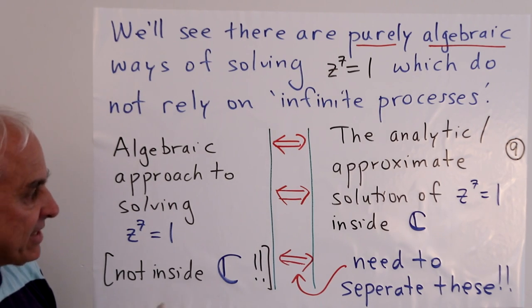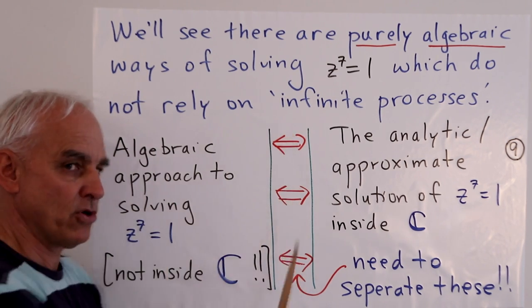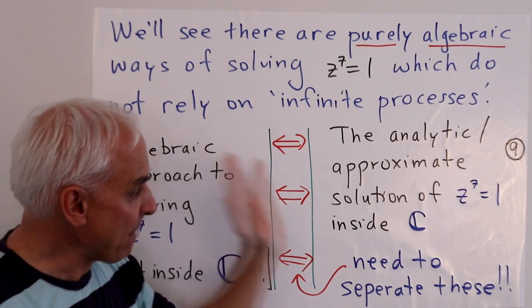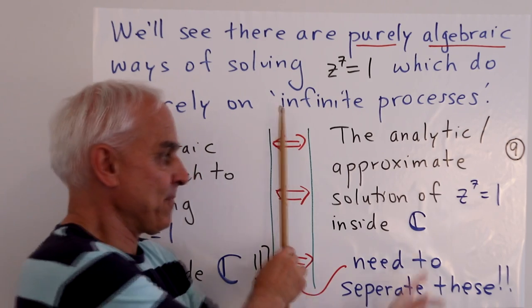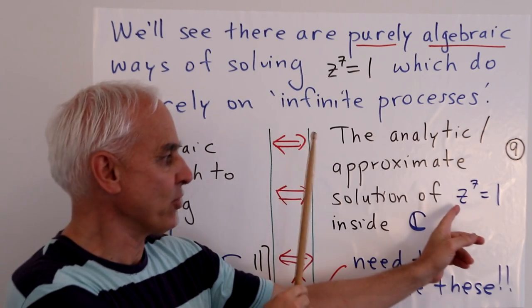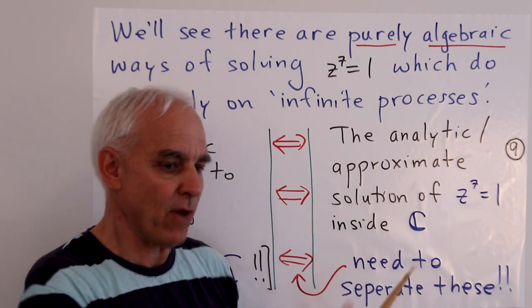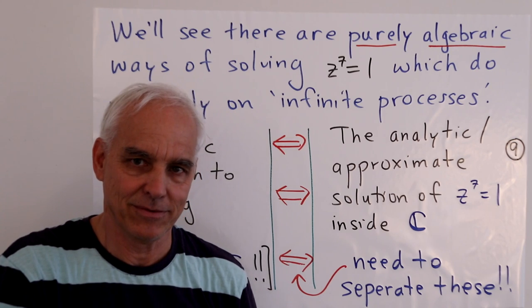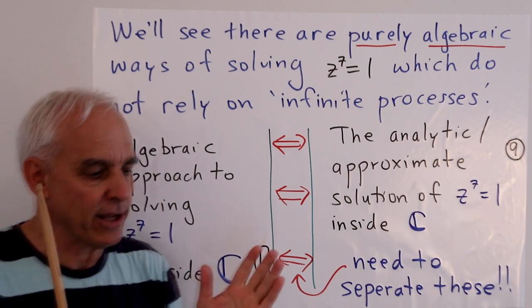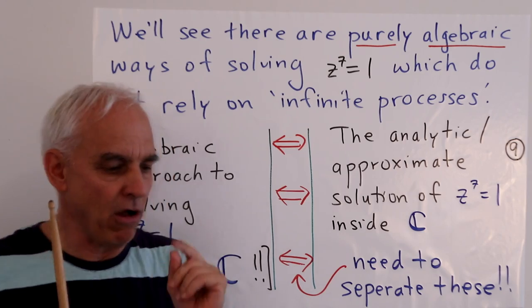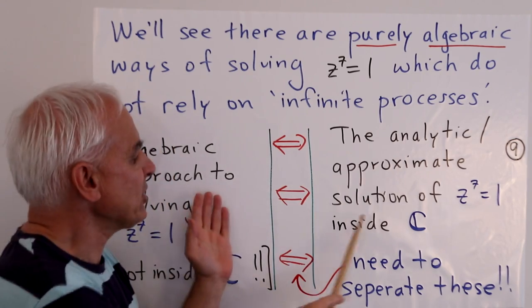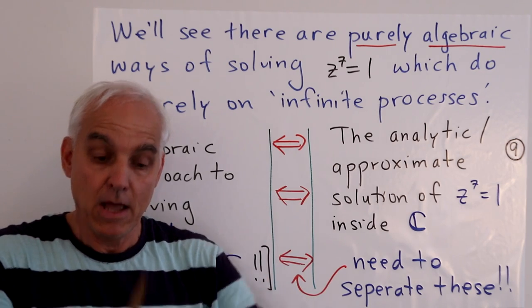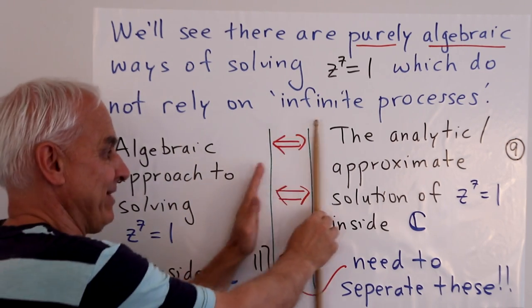But the point is that it's separate. This algebraic approach to solving something like z⁷ = 1 should be kept separate from the analytic approximate approach involving seven numbers on the unit circle which are equally spaced. Currently in many algebraic minds, these two things are intimately connected and they're part of the same story. What I want you to start thinking about is that we have to separate these things. We have to push them apart. We have to make some space.